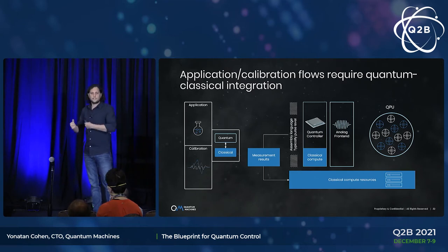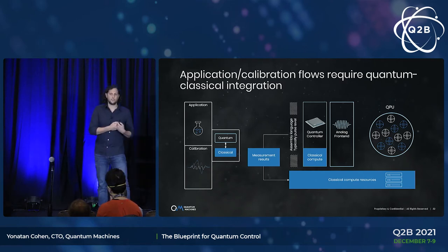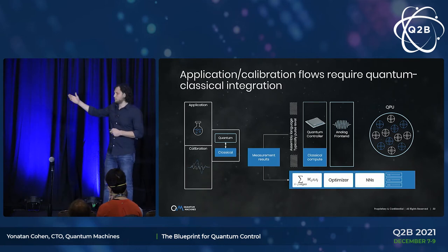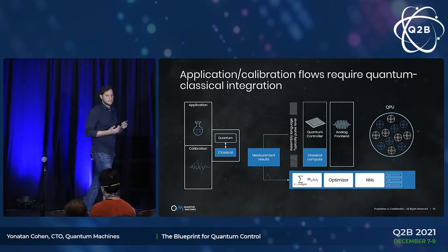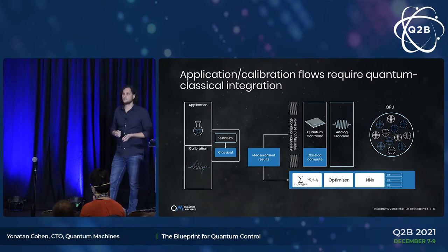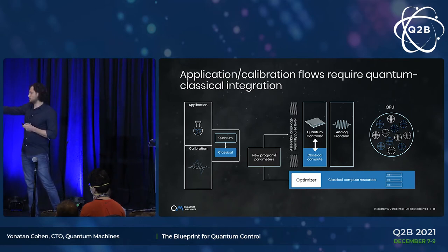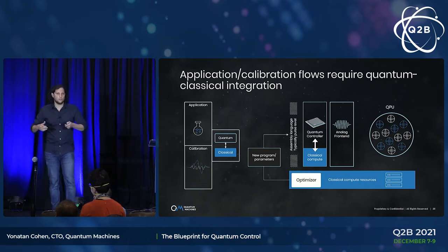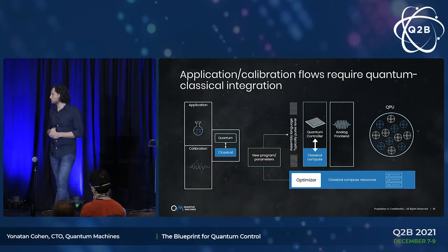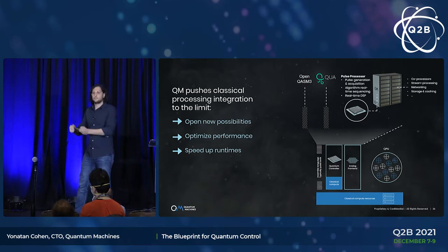The quantum controller, while performing circuits on the QPU, also performs measurements and sends results back to the server layer, which performs further classical processing like evaluating cost functions, optimization, classical analysis in calibrations, and extracting Hamiltonian parameters. This typically results in the classical compute resources generating another program to run on the quantum machine, or updating parameters of an existing loaded program in the controller. Classical processing integration is super important both on the real-time layer and on the server layer.